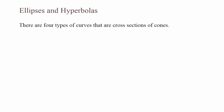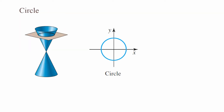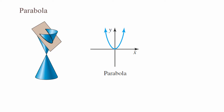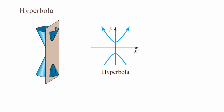Ellipses and hyperbolas. There are four types of curves that are cross sections of cones: circle, ellipse, parabola, and hyperbola. When a plane crosses a cone horizontally, it forms a circle. When the plane crosses the cone at an angle, it forms an ellipse. When a plane partially crosses a cone, it creates a parabola. When a plane vertically crosses a cone, it creates a hyperbola.